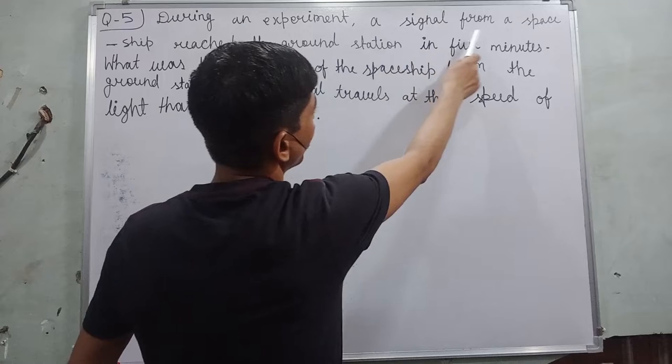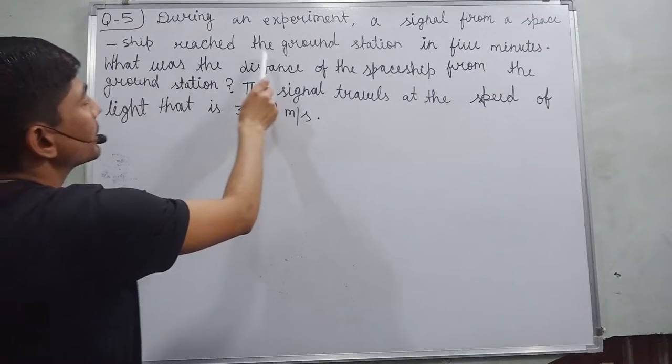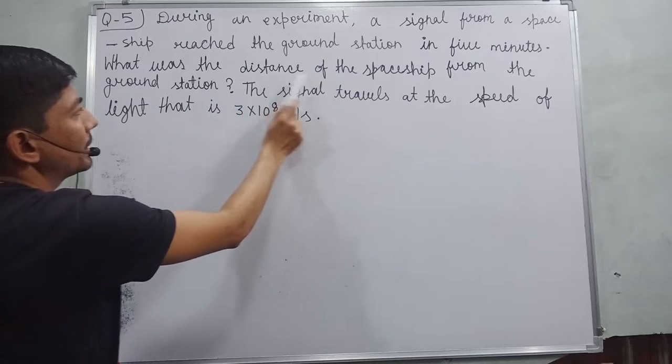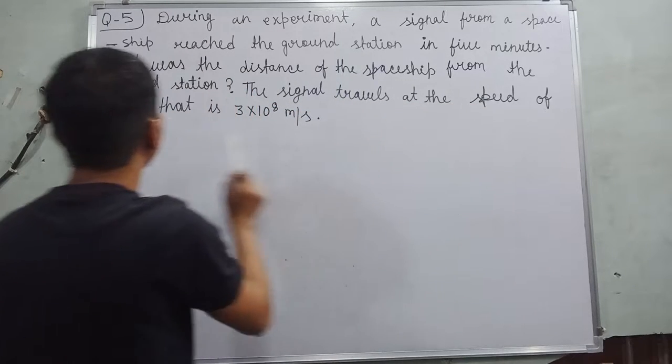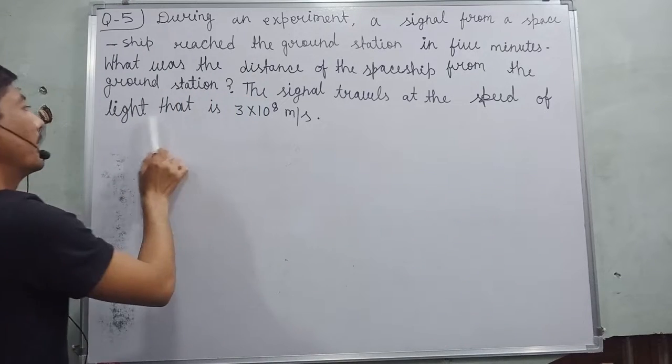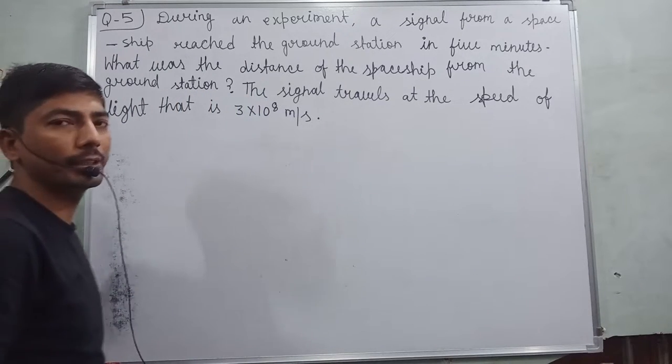During an experiment, a signal from a spaceship reached the ground station in 5 minutes. What was the distance of the spaceship from the ground station? The signal travels at the speed of light, that is 3 × 10⁸ meter per second.